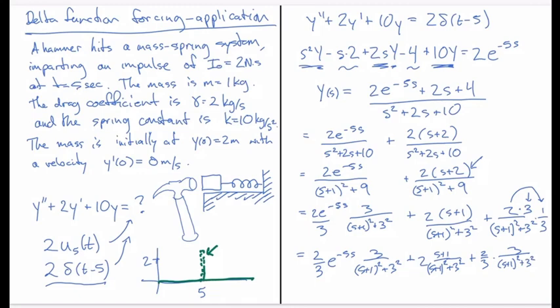And now I can invert each of these fairly simply. So y of t is equal to 2 over 3 times u5 of t, coming from this exponential times shifted thing, and then multiply that by e to the minus t minus 5, but then shifted by t minus 5 because of the exponential term, and then what's multiplying it is a sine 3t. And then for the next term, I just get plus 2 times cosine 3t.